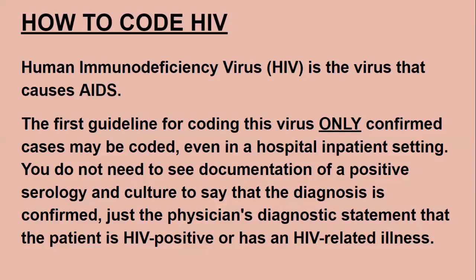How to code HIV — this is the second part. HIV is coded as B20. HIV is the virus that causes AIDS. The first guideline for coding this virus is you only code confirmed cases, even in the hospital inpatient setting. You do not need to see documentation of a positive serology and culture to say the diagnosis is confirmed — just the physician's diagnostic statement that the patient is HIV positive or has an HIV-related illness. So you may see the doctor has given HIV as a diagnosis without seeing the lab report.